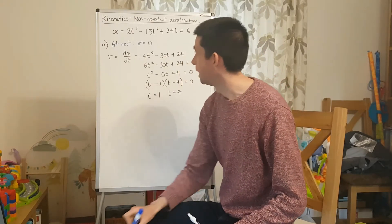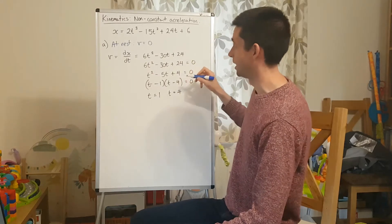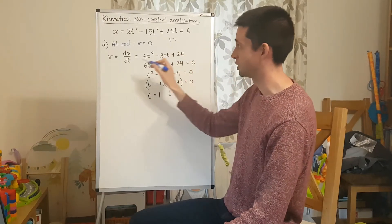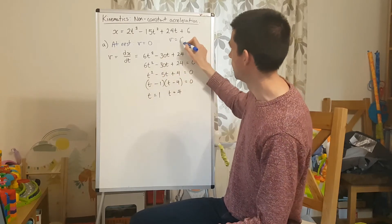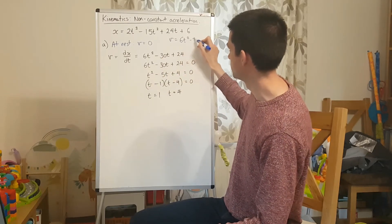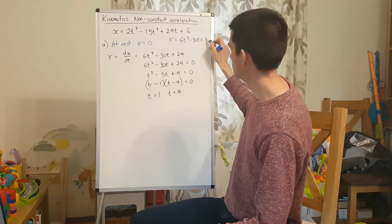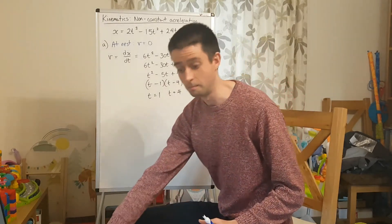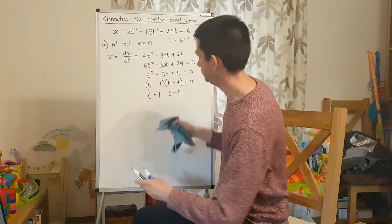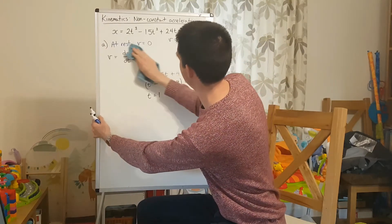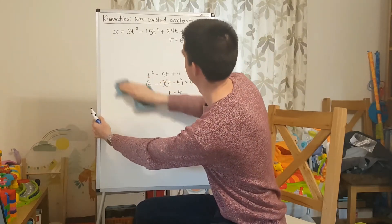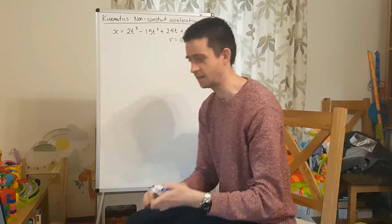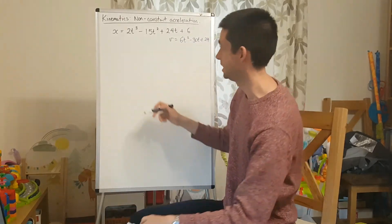Before I do part B, I'll jot down the key information I've found: the expression for velocity is 6t squared minus 30t plus 24, and I'm going to need that in part B. Part B asks me to find the velocity and speed of P when t equals 3.